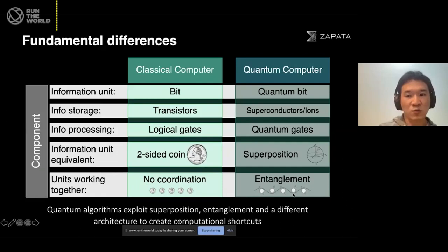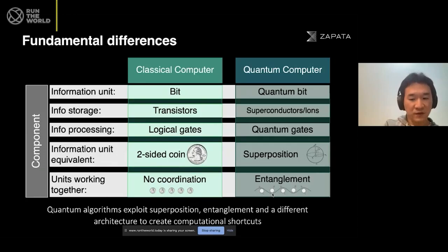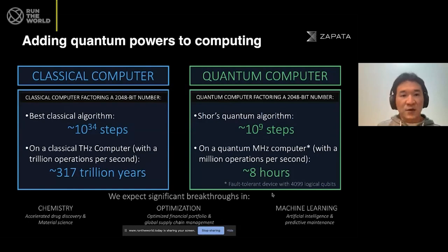As for units working together — in classical computers there's no coordination. But in quantum computers there's something called entanglement, and this makes quantum computers very special. I can't go into too much detail because I have limited time, but those are the fundamental differences between classical computers and quantum computers.